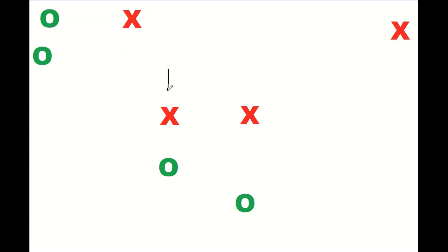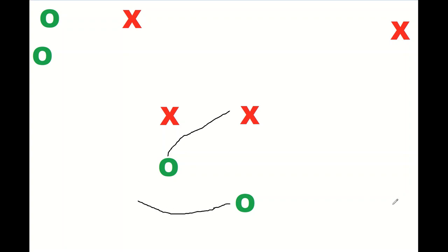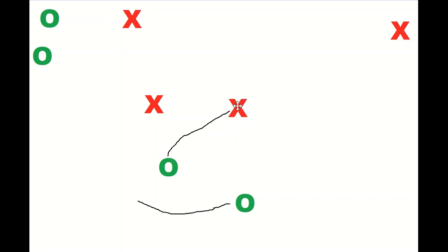In banjo, the outside defensive back takes whichever receiver goes to the outside, and the inside defensive back takes whichever receiver goes to the inside. If they run straight verticals, nothing changes — each DB matches up with the receiver over them. If the inside receiver slants in and the outside receiver goes to the flat, the outside DB already has leverage for the flat route and the inside DB has leverage for the slant — each plays their receiver man to man.